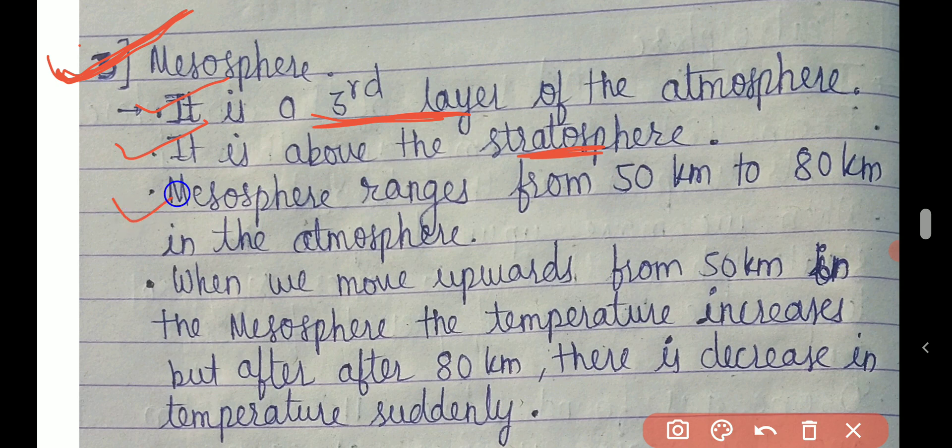Mesosphere ranges from 50 kilometers to 80 kilometers in the atmosphere. That is a 30 kilometer range, meaning from ground level, 50 to 80 kilometers is the range of the mesosphere.